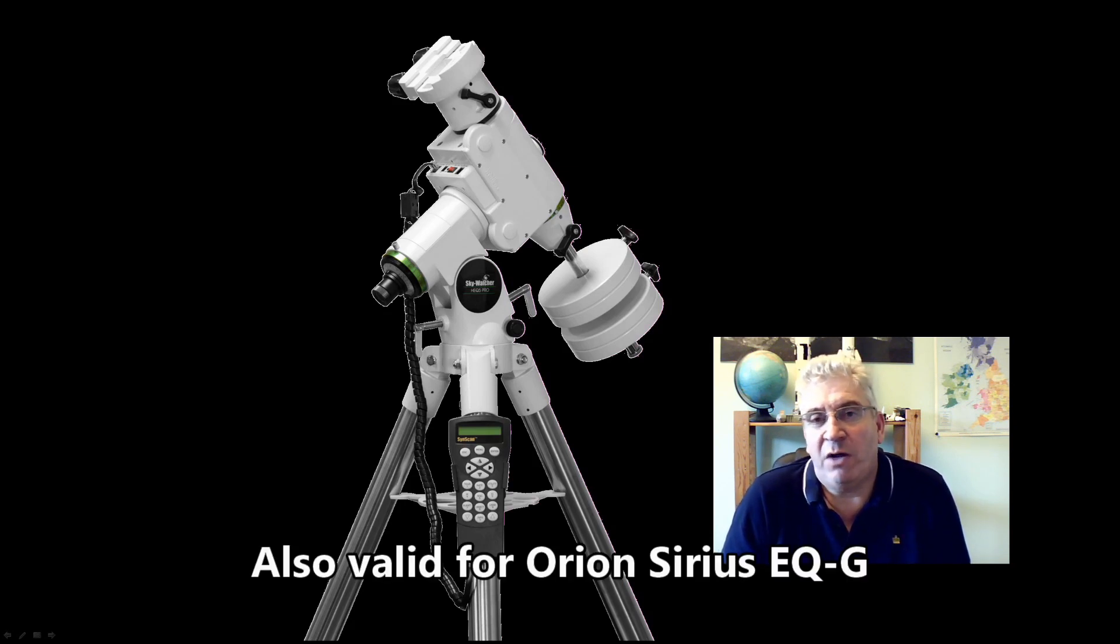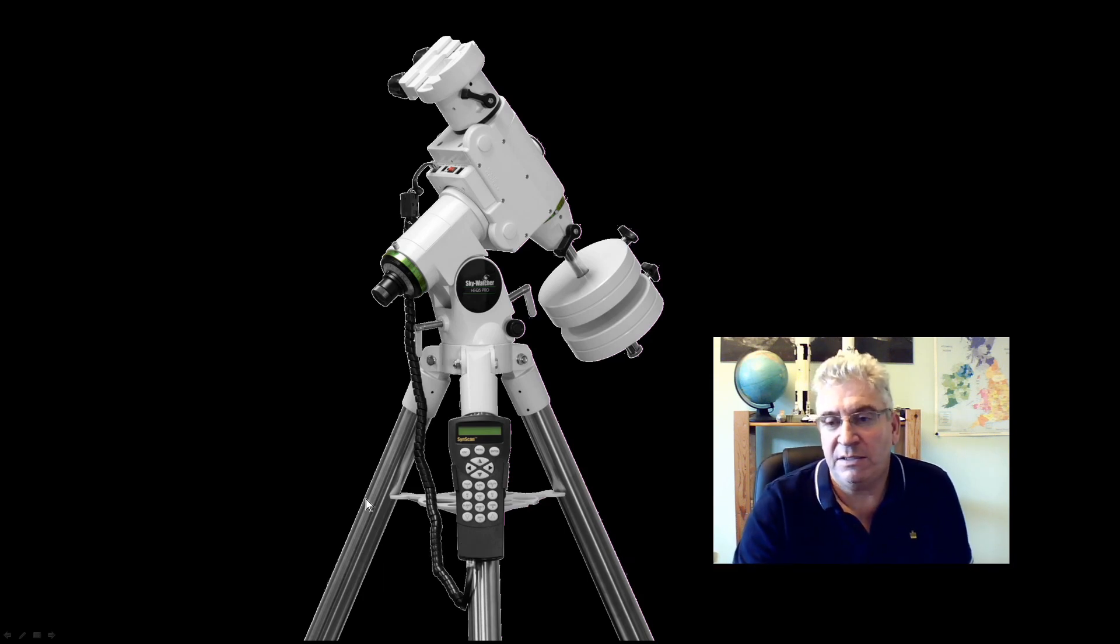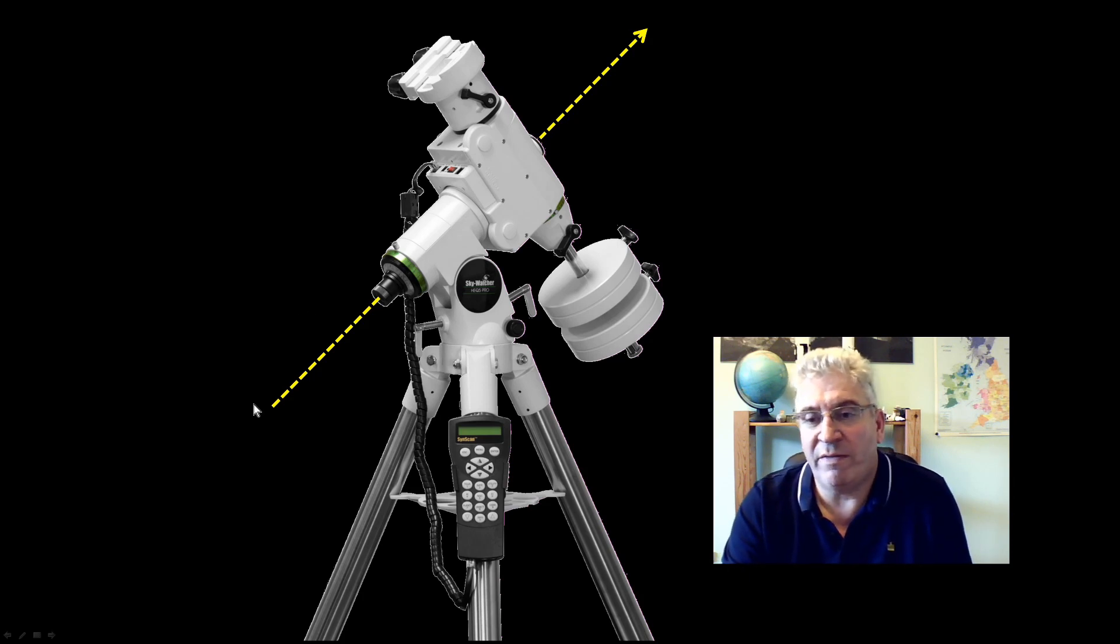Obviously you know that your polar scope is used in polar alignment, and that's essentially a process where you're lining up the right ascension axis of your mount so that it's pointing directly at the north celestial pole if you're in the northern hemisphere, or at the south celestial pole if you're in the southern hemisphere.